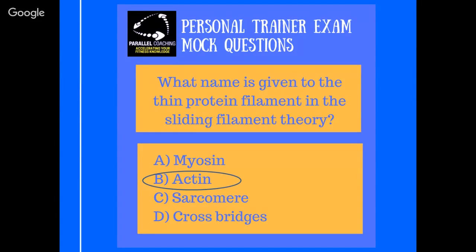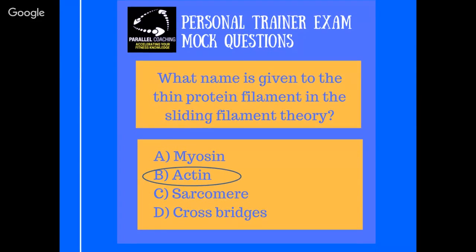Actin is the thin protein filament. The way I remember this is if you look at the word actin and you look at the word thin, they are very, very similar — the T, I, and N are the same, it's just got a little H in there to confuse matters. Actin is the thin protein filament, and myosin is the fatter one. The fatter one is like a little caterpillar — it's got little myosin heads on it, like little golf club heads, and as it moves, it attaches to the actin. So in sliding filament theory, the thin protein filament is the actin.